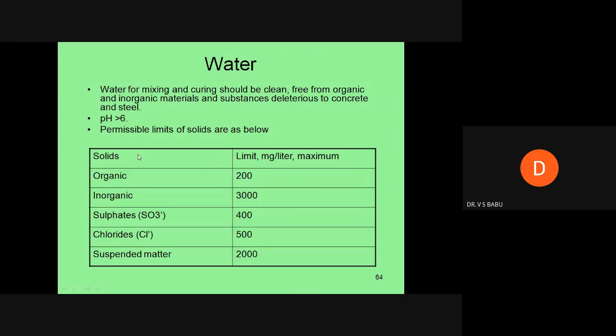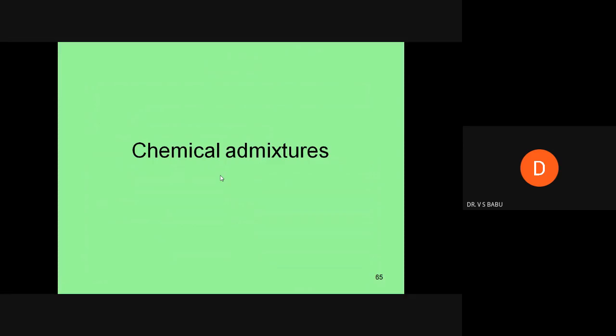Water mixed in concrete should be potable municipal water. Organic solids should not exceed 200 mg per liter, inorganic 3000, chloride 5000 mg per liter, suspended matter 2000, and pH should always be 6. These requirements are given in IS 456.